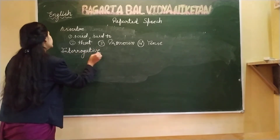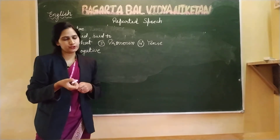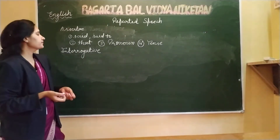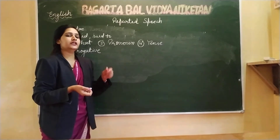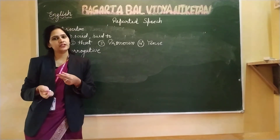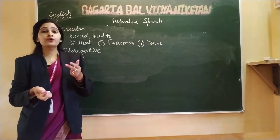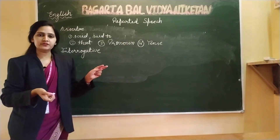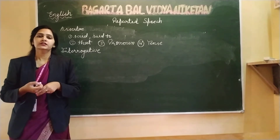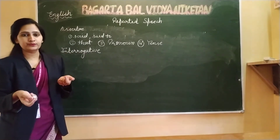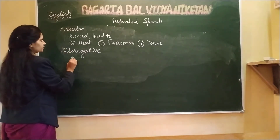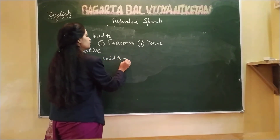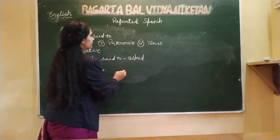Moving on to the second type: interrogative sentences. These are sentences used to ask questions. Interrogative sentences are formed in two ways. One is with the help of a helping verb — where the helping verb comes first and the subject after, like 'Are you going with him?' Second is using a WH-word, like 'What are you doing?' When changing these, 'said' changes to 'asked' or 'inquired'.